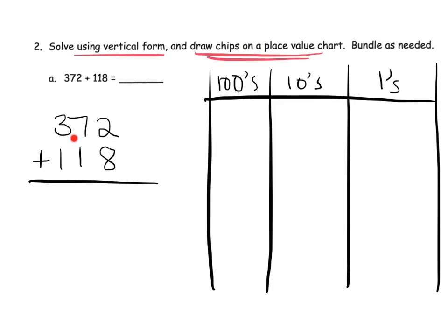And now we're ready to model. So we're going to begin by modeling 372. 1, 2, 3, 1, 2, 3, 4, 5, 6, 7, 1, 2. So there's our 372. And then 100, 10, and 8 ones. So there's our model for the problem. And now we are officially ready to start our adding.